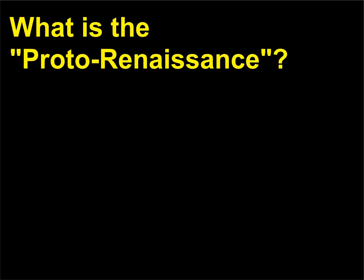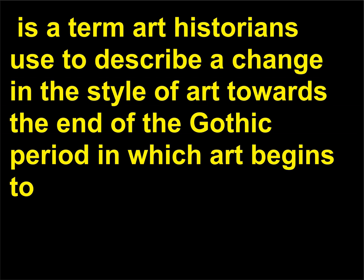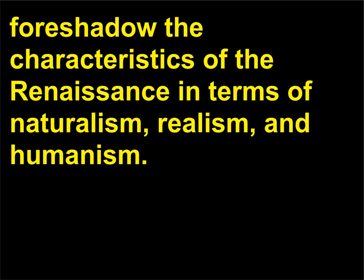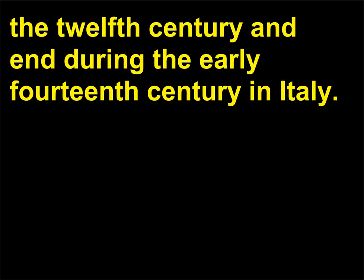What is the Proto-Renaissance? The Proto-Renaissance, essentially meaning pre-Renaissance, is a term art historians use to describe a change in the style of art towards the end of the Gothic period, in which art begins to foreshadow the characteristics of the Renaissance in terms of naturalism, realism, and humanism. Different art history books cite different date ranges, but it is generally considered to begin during the end of the 12th century and end during the early 14th century in Italy.